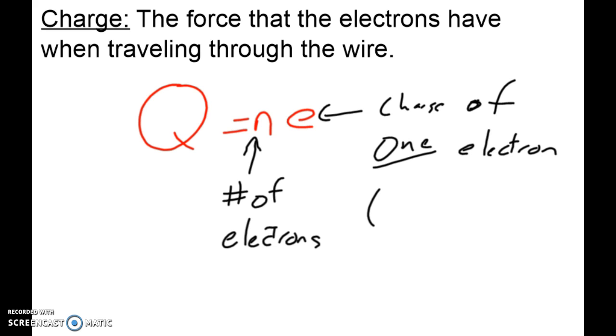Now as far as we're concerned, this is a constant number. This number would be 1.6 times 10 to the negative 19 C's. Because when we're measuring charge, the units are known as coulombs. C-O-U-L-O-M-B, or capital C for short.